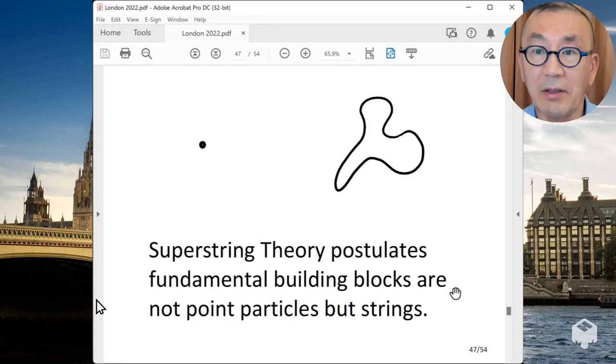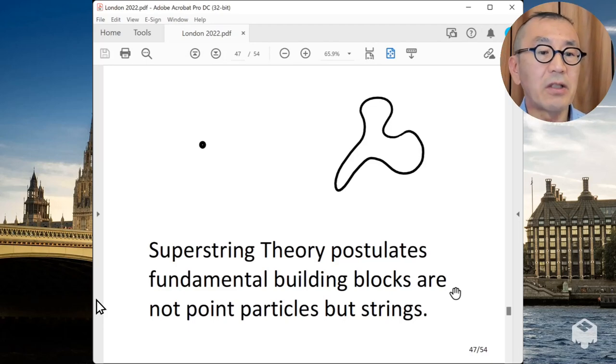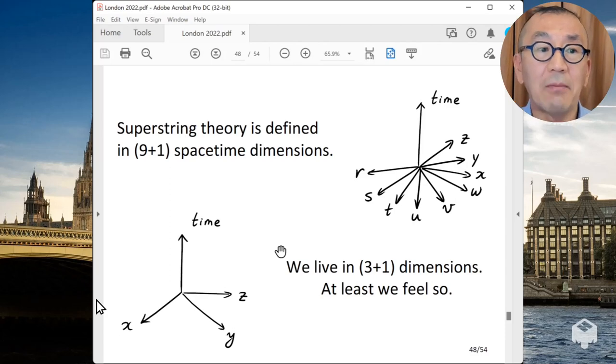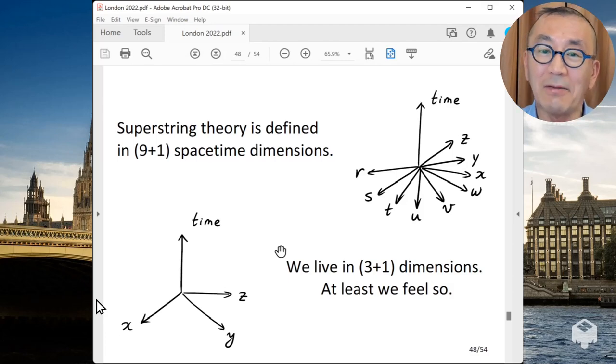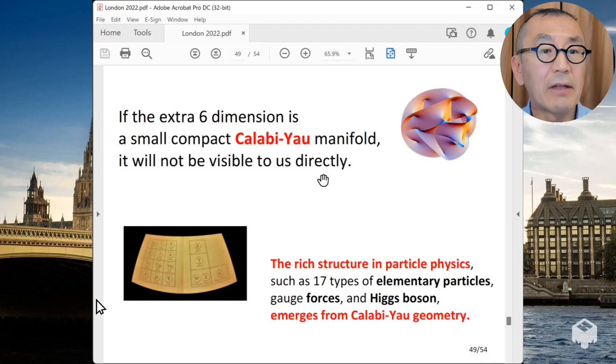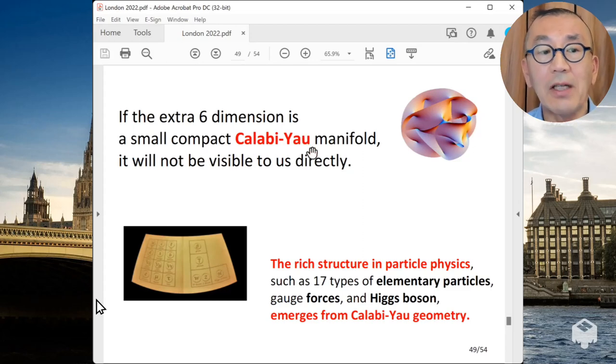Some of us study this theory because of this motivation. And super string theory postulates the fundamental building blocks are not point particles, but strings. And it also postulates that the space that the theory is defined is 9 dimensions plus 1 time. That's actually the origin of the name, the man from the 9 dimensions for the movie. But we live in 3 spatial dimensions at 1 time. So what happened to the difference between 9 and 3? And the super string theorists postulates that, in fact, this extra 6 dimensions is a small compact Calabi-Yau manifold.